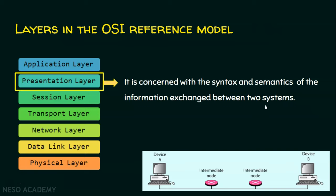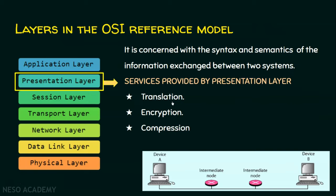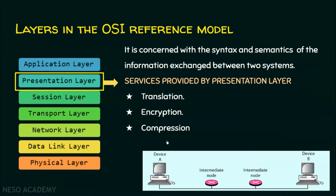Now we will see the services offered by the presentation layer. The presentation layer provides three services: translation, encryption, and compression. Translation means converting the data into a common format that is acceptable by both the sender and the receiver. Converting the sender-dependent data into a common format accepted by all devices is called translation.